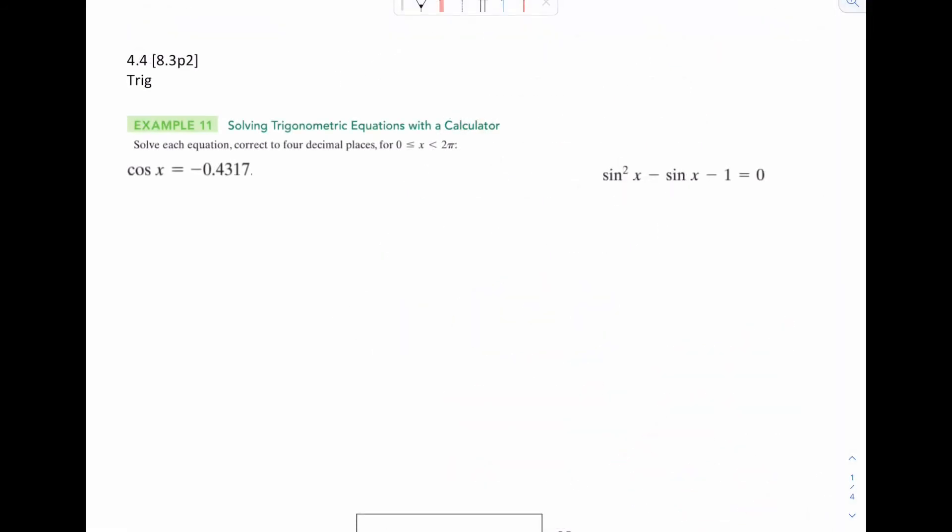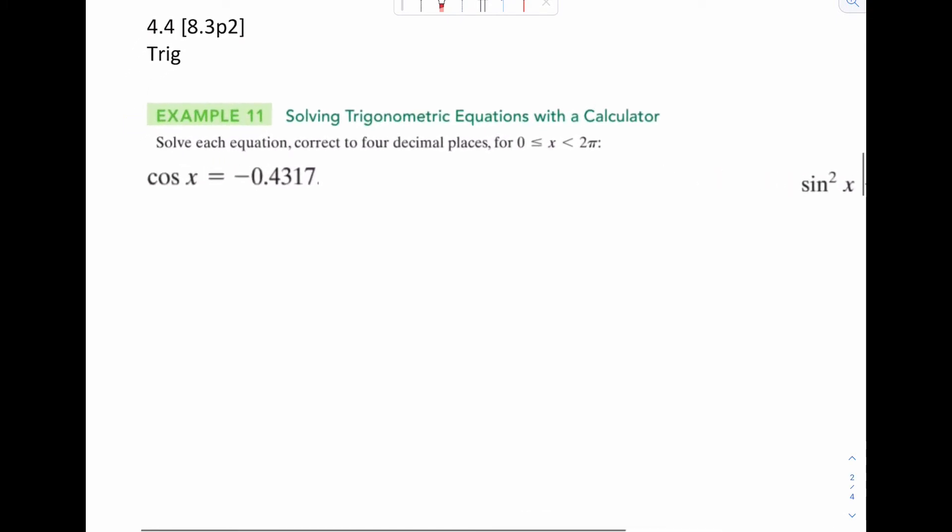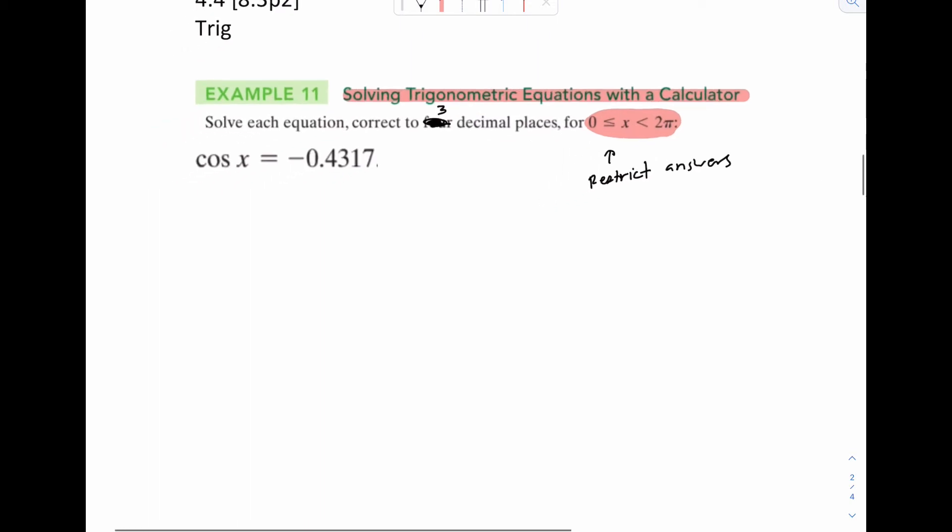For our next example, we'll be talking about how to use your calculator to solve these equations. So notice in the instructions, it says solving trig equations with a calculator. It also says round to four decimal places. We're going to cross it out. We're going to put three. That's more standard. And you also want to note that there's a restriction on the answers from zero to two pi. So note that to yourself, this will restrict your answers. The process for these is pretty much always the same. You want to zero your equation. Okay, so equation equals zero.